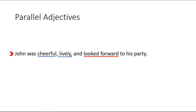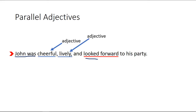Parallel adjectives. John was cheerful, lively, and looked forward to his party. We've got two adjectives here, but notice how it switches. The trick is to test each element: John was cheerful, John was lively, John was looked forward to his party — doesn't sound right, and it's not right.